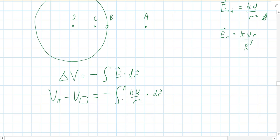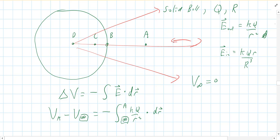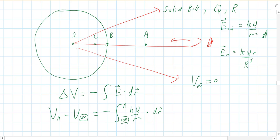We're going to start with the outside, integrating kq over r squared dot dr from somewhere to A. We know the voltage at infinity is roughly zero, so we start at infinity and integrate our way to A. The electric field lines point outward, and we're going against the field — going uphill — so we gain voltage. Our voltage at A should be some positive value.